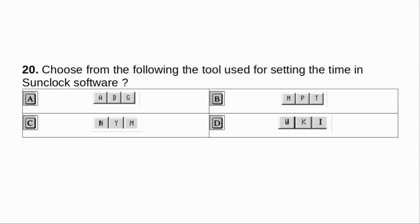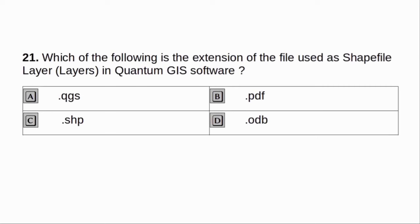Choose from the following the tool used for setting the time in SunClock software. Answer: A. Which of the following is the extension of the file used as shapefile layer in Quantum GIS software? A. .qgs. B. .pdf. C. .shp. D. .odb. Answer: C. .shp.